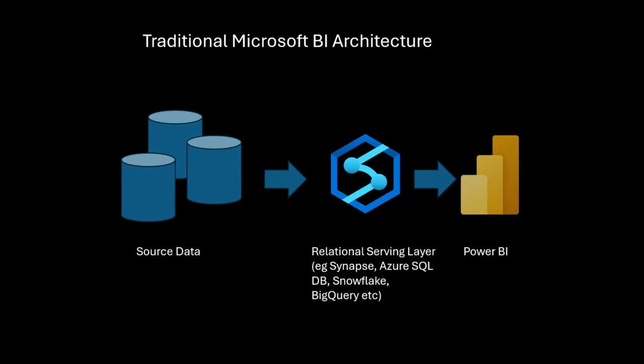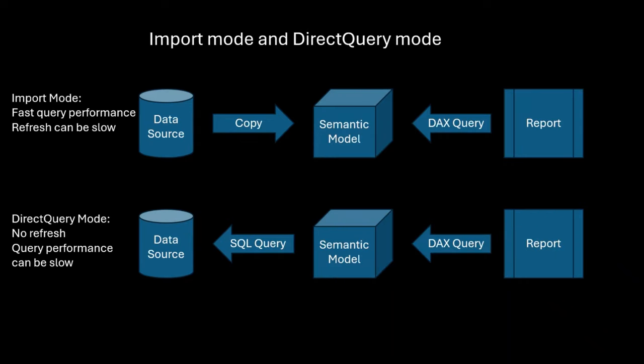Why do you do that? Power BI likes to connect to relational databases. You can connect it to files, but it tends to be quite slow to import data from files, and it's generally better to load it into a relational database before you get into Power BI. So things have been like this for years and years. Once you've got your data in your relational serving layer and you build your semantic model—what used to be called a dataset—you then had a choice to make about the storage mode.